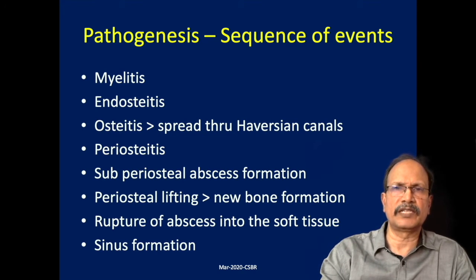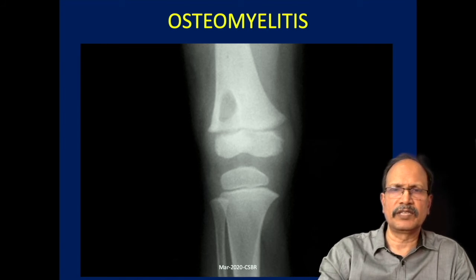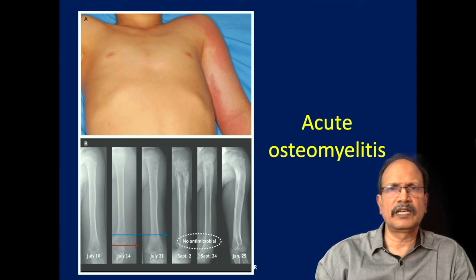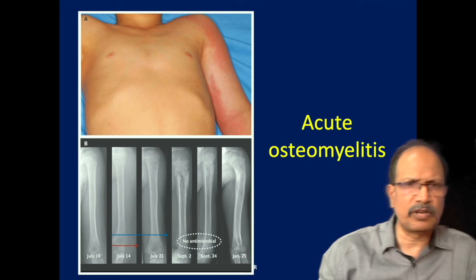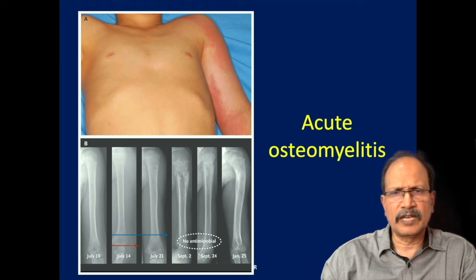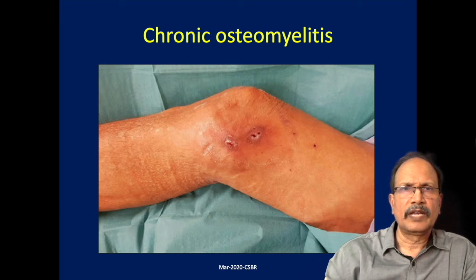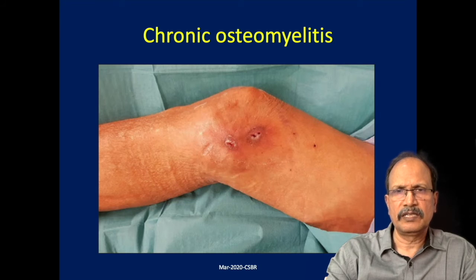Acute osteomyelitis may show no abnormality in the bone, or sometimes an osteolytic or rarefied area within the metaphyseal region. This is a clinical example of osteomyelitis wherein you can see signs of inflammation in the form of redness and swelling involving the upper and lower ends of the humerus. In the initial stages, X-rays may show no obvious pathology, but as the lesion ages, rarefactions, periosteal reactions, and abscess formation become apparent. In chronic osteomyelitis, there may be discharging sinuses that discharge not only pus but also pieces of bone.